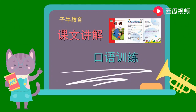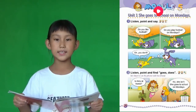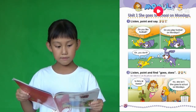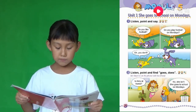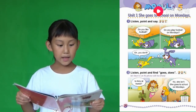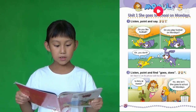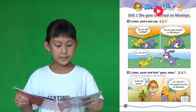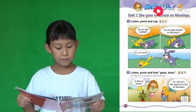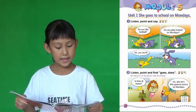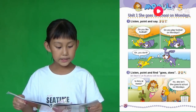请继续收看更详细的课文讲解和口语训练。请把书翻到第26页。Module 5, 模块5. Unit 1. One. Listen, point and say. 听，一听。